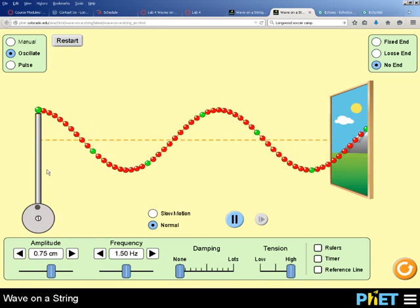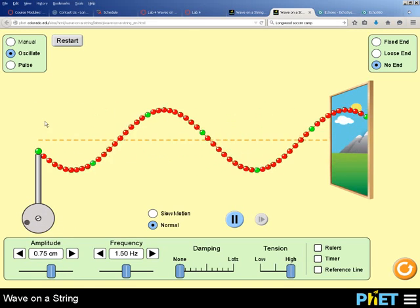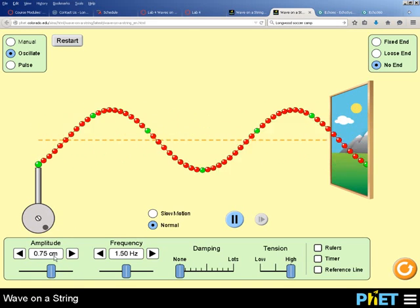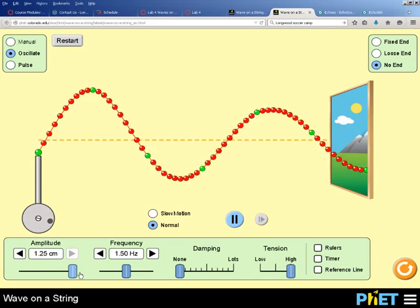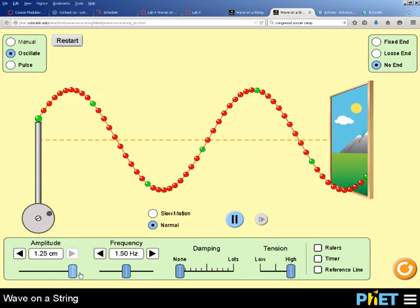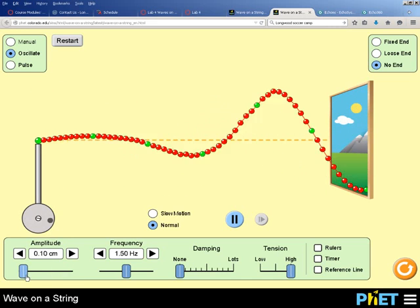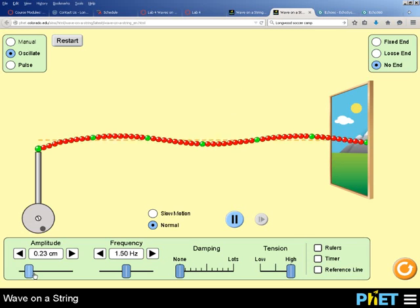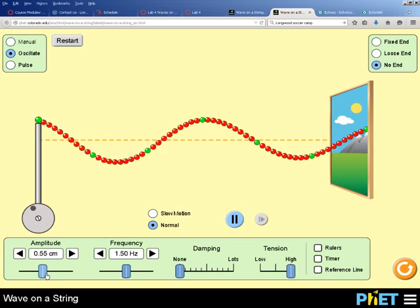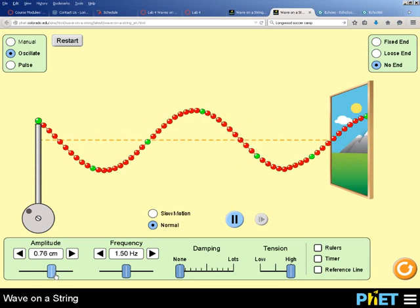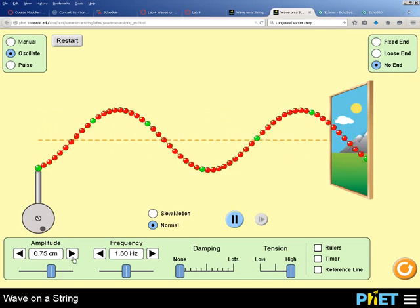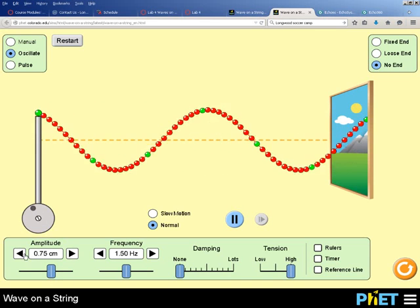I can also change the amplitude of the wave, which is basically how high this is going to go up and down. And the amplitude can be adjusted over here. So I can make it a really large amplitude or a very small amplitude. We're going to set our amplitude between 0.75 centimeters and 0.8, so I'm going to set it at 0.75 centimeters. You can also adjust it with the little arrows.